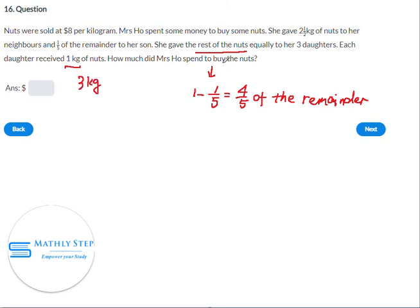How much did Mrs. Ho spend to buy the nuts? We know that the daughters received 3 kg of nuts, and this 3 kg corresponds to 4/5 of the remainder after giving the nuts to the neighbors. So the remainder will be 3 divided by 4/5.